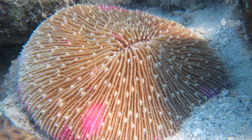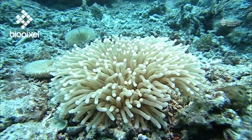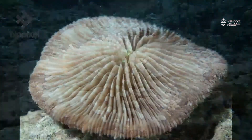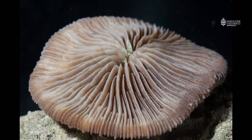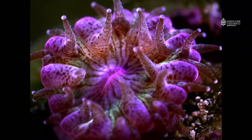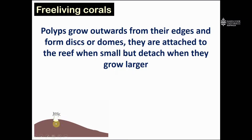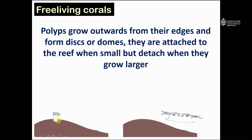Free-living corals grow quite similarly to foliose corals in that the polyps grow outwards from their edges, and these free-living corals can form discs or domes. When they start their life, like other corals, free-living corals are actually attached to the reef, but they detach as they grow larger. So we have our small single corallite attached to the reef, and it grows larger over time by expanding outwards and eventually detaches from the reef.